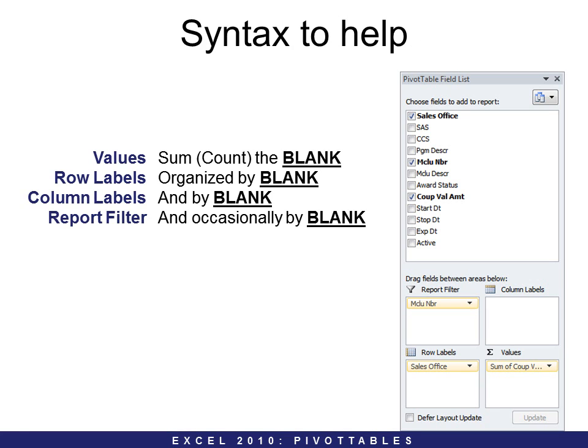So that's the physical way of doing it. But how do you do it intellectually? How do you know which fields go into which areas? This is a syntax I've developed to help determine, one, if you need a Pivot Table, and two, how to use it. The formula is: SUM the blank — but COUNT or any normal formula works here. If you can fill in that blank, a Pivot Table might work for you. Then: Organize by blank — that goes into a row label. And by blank — a column label. And occasionally by blank — a report filter. If you can fill all those in, you probably need a Pivot Table.